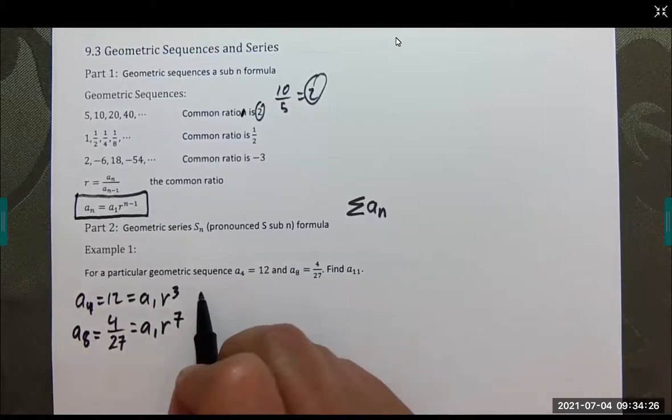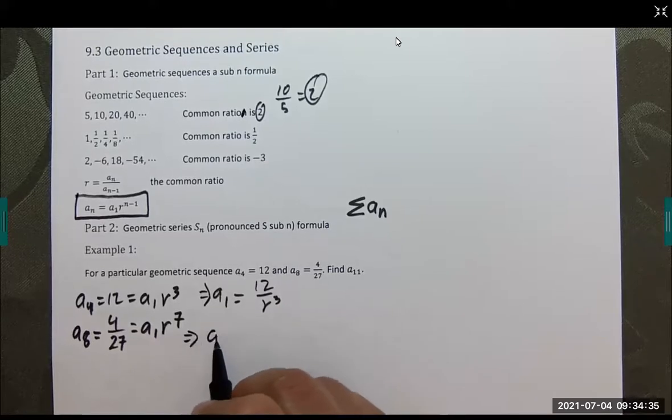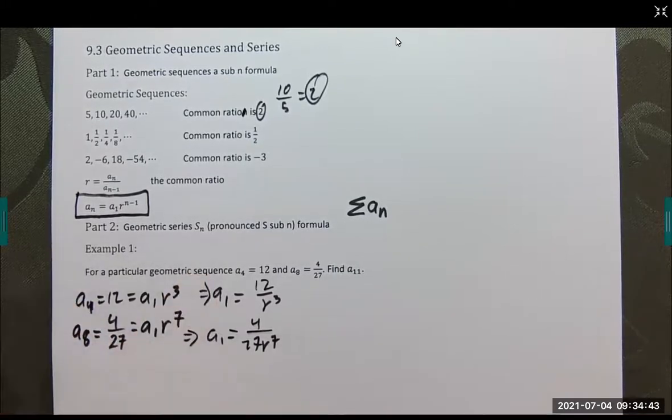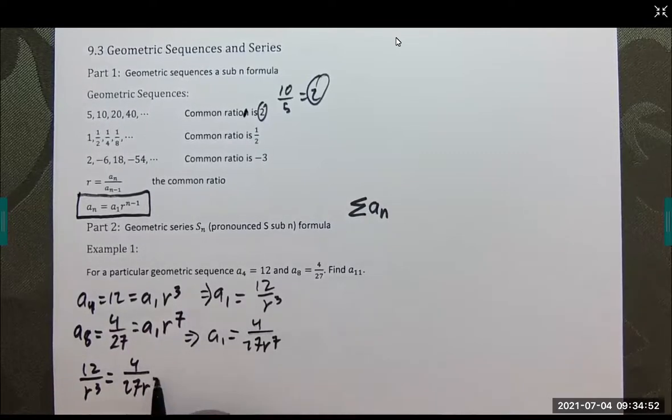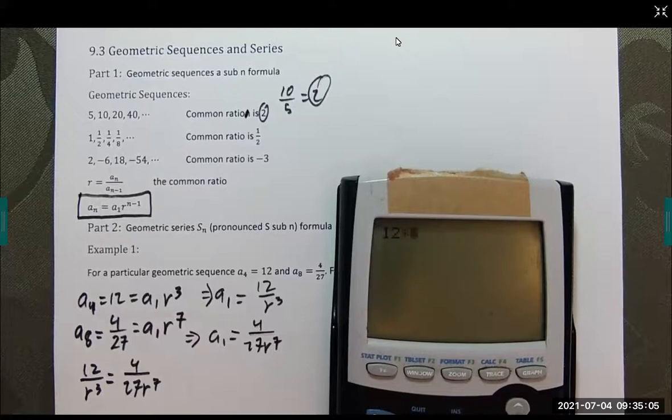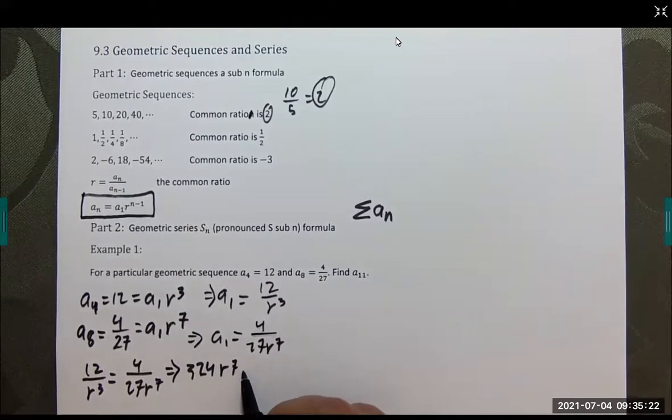What I'm going to do for each of these is solve for a sub 1. A sub 1 is going to be 12 over r to the 3rd. In this case, a sub 1 is going to be 4 over 27 r to the 7th. What I can do now is set those two equal.